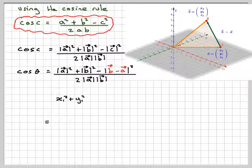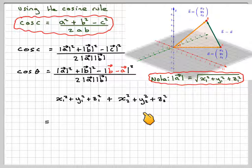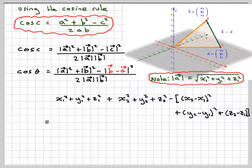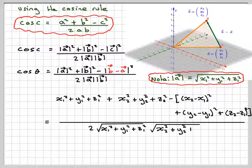Now it starts to get a little bit messy. The magnitude squared of a is x1² + y1² + z1², and of b is x2² + y2² + z2², minus the magnitude of b minus a squared, which is (x2−x1)² + (y2−y1)² + (z2−z1)², all over 2 times the square root of (x1²+y1²+z1²) times the square root of (x2²+y2²+z2²).